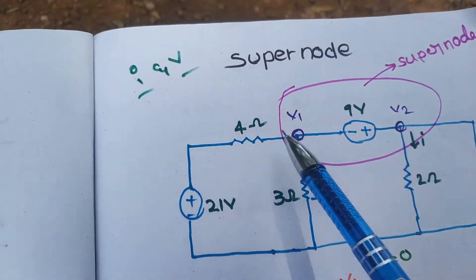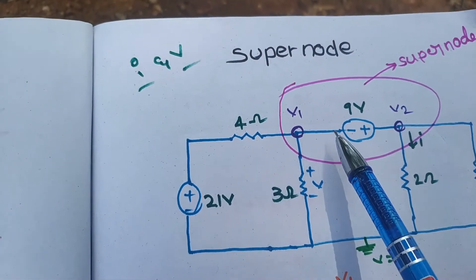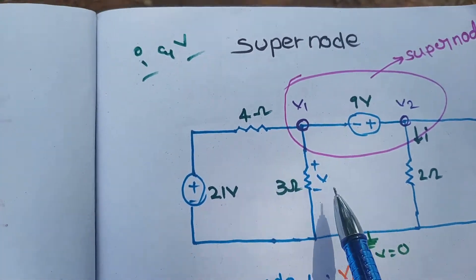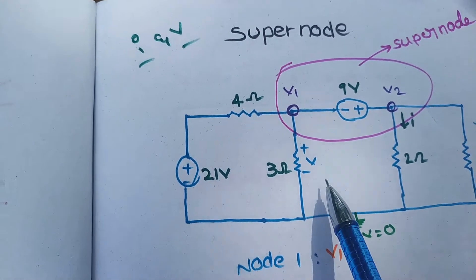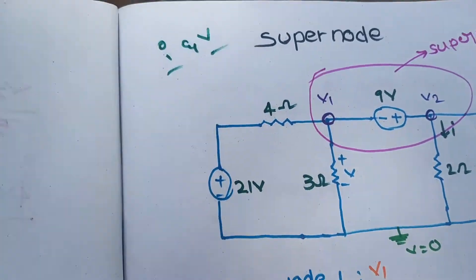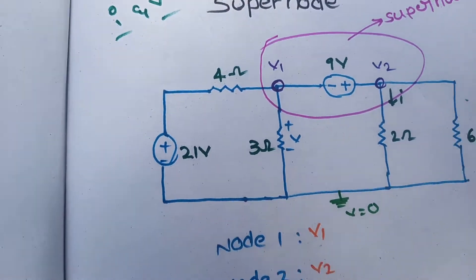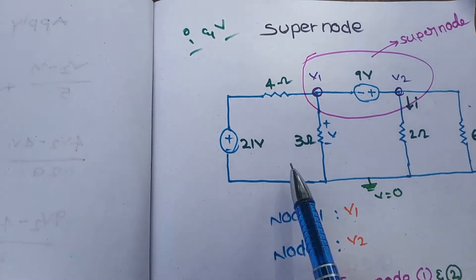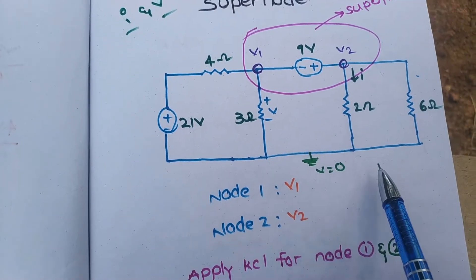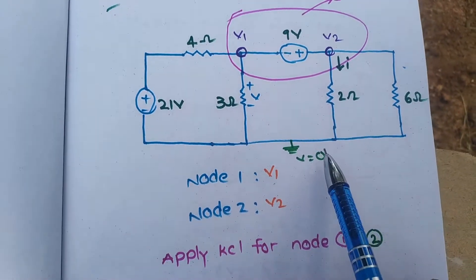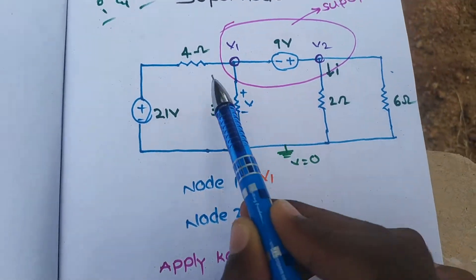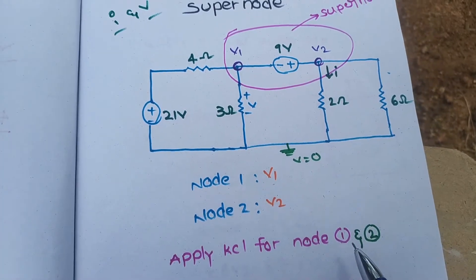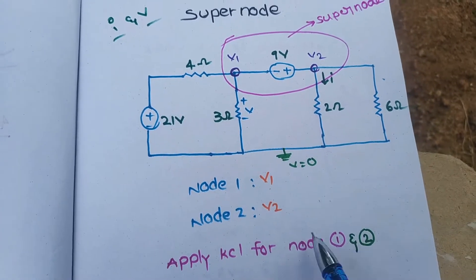If you have two nodes in the middle, you will get the voltage on the Supernode. Before you get a problem, you can see it. This is the problem — observe carefully. This is Node 1 and this is Node 2. Apply KCL for Node 1 and 2.